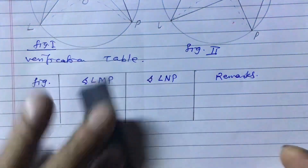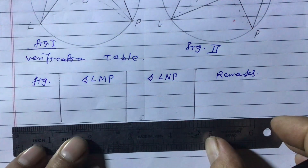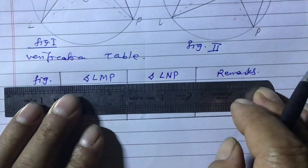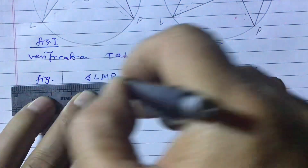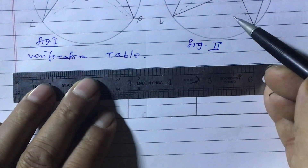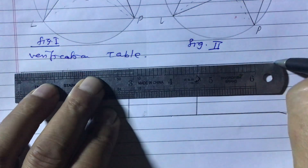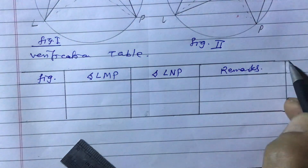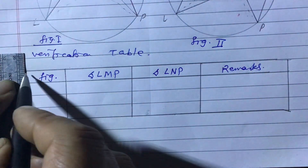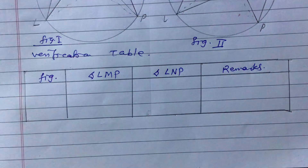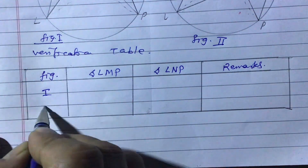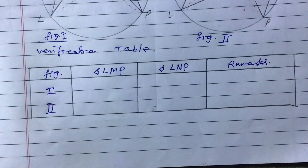In the exam, you must draw the table and figure everything by pencil. Do not draw by pen — some students have the habit of drawing by pen. Figure one measurements will go here, figure two measurements will go here. Now let us measure the angles.